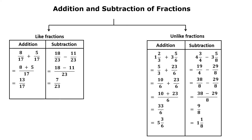While doing the addition of two unlike fractions, first we take the LCM of the denominators and convert both fractions into like denominators, then we add them. For example, 1 integer 2 upon 3 plus 3 integer 5 upon 6 equals 5 upon 3 plus 23 upon 6. The LCM is 6, so 10 plus 23 upon 6 equals 33 upon 6, which is 5 integer 3 upon 6.